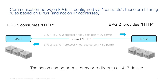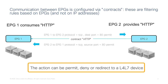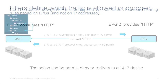Within each contract you can use a filter to define the protocol and ports that are allowed. Traffic can be permitted — this is the normal configuration — but you can also have rules to drop traffic, or a configuration that doesn't permit traffic but instead redirects it; for instance, to a layer 4 to layer 7 device like a firewall.